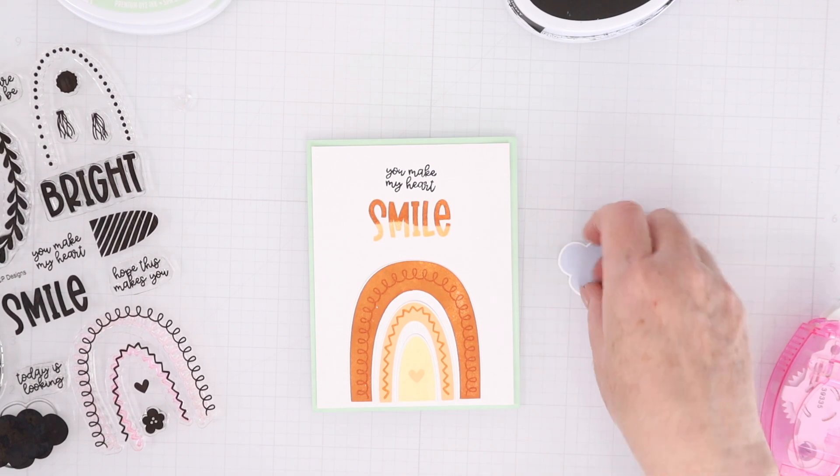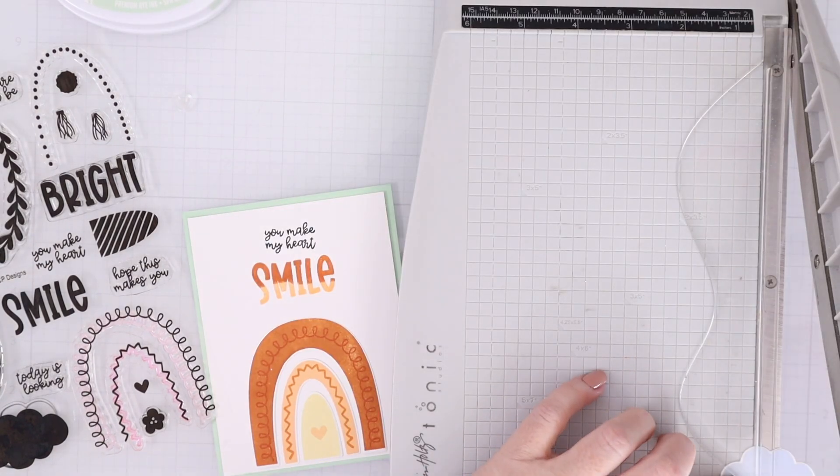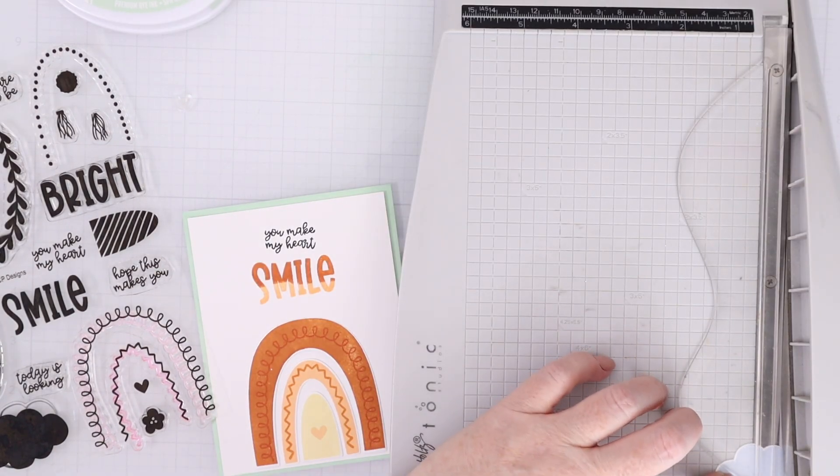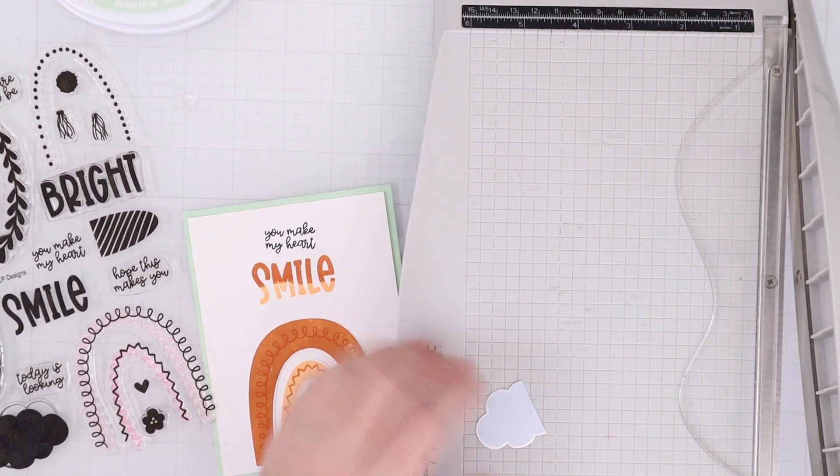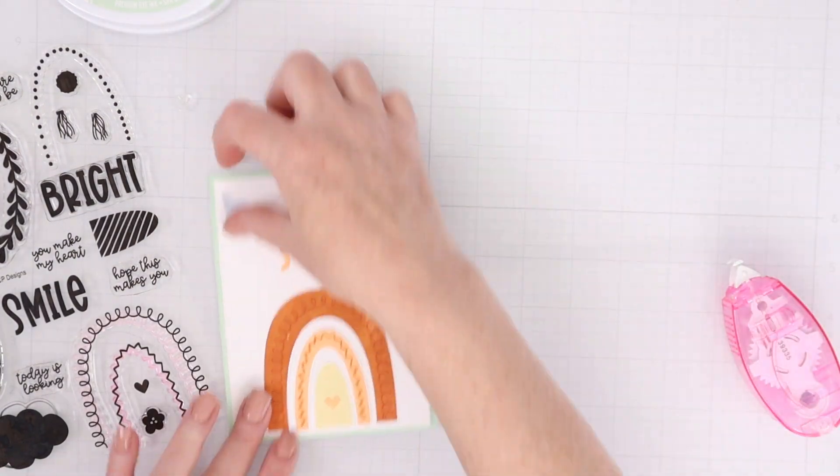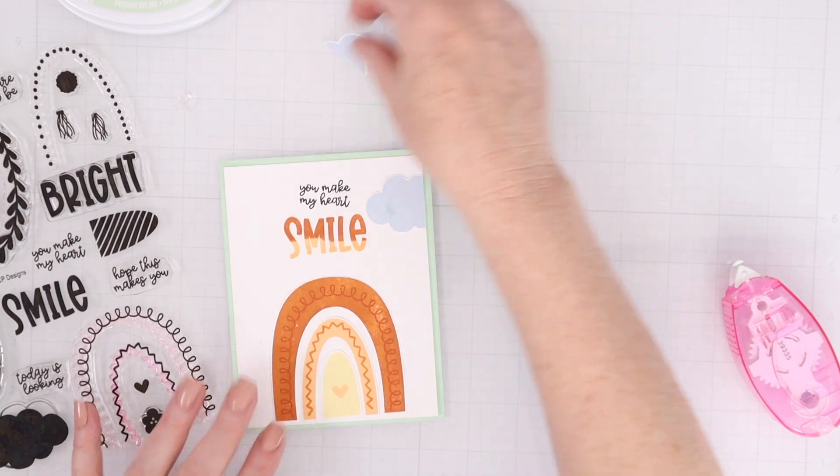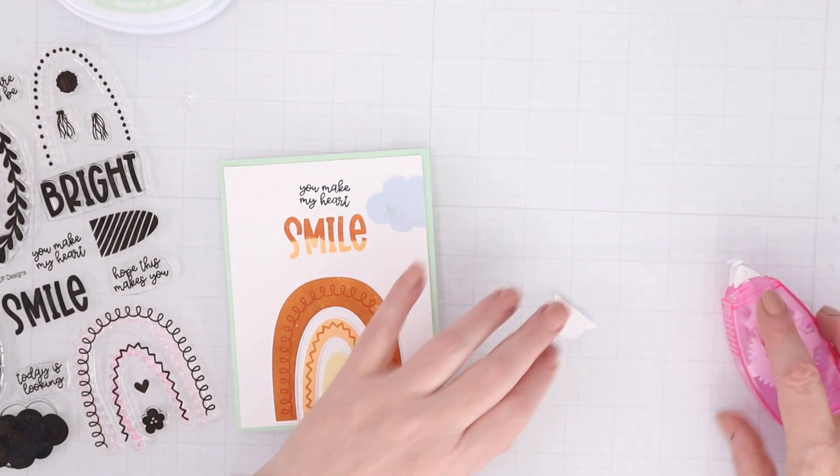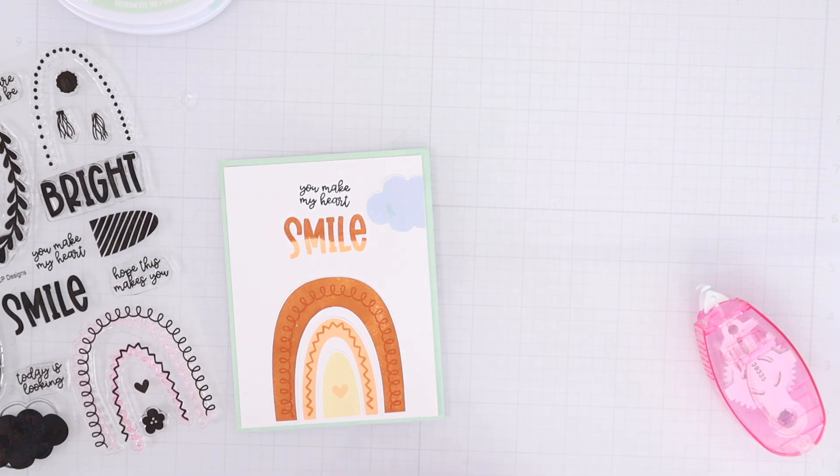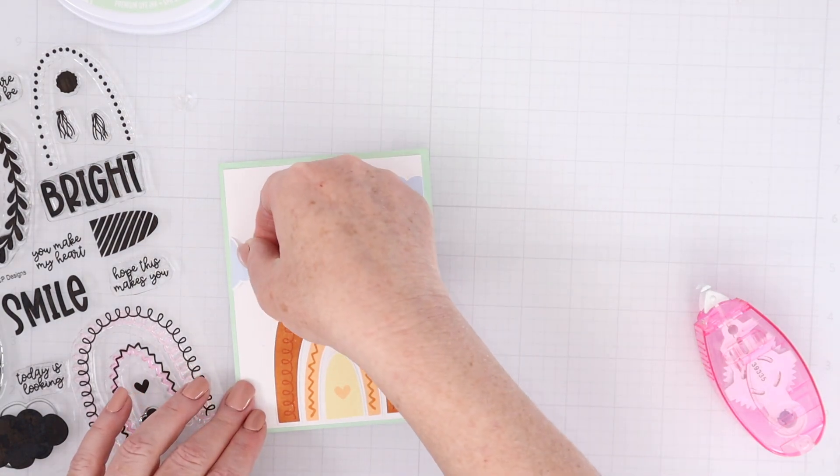I'm using some Thermoweb Memory Runner XL to adhere my rainbow arcs down to my panel. And you could obviously, because I cut them out, you could pop them up. For this card I felt like there was enough going on that I didn't need all that extra dimension.